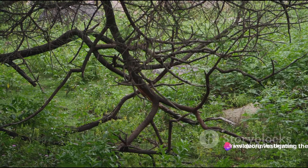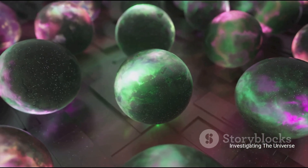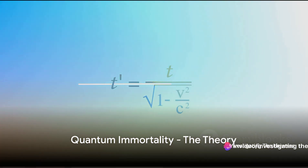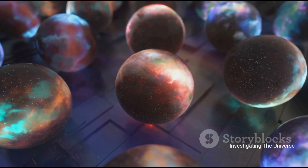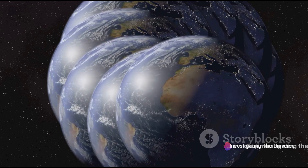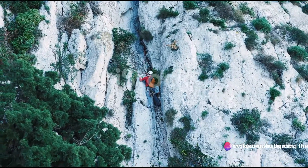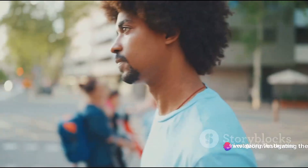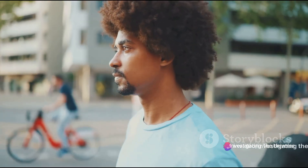In essence, the many-worlds interpretation proposes that for every decision you make, there are countless other versions of you in parallel universes making different decisions. Each branch of the tree represents a different universe where a different outcome has taken place. The universe is constantly branching into different realities, each as real as the one we experience. Armed with this understanding, we can now explore quantum immortality in more depth. It's a theory that suggests, in the grand scheme of the multiverse, you as a conscious entity never truly die. According to the many-worlds interpretation, a life-threatening situation will cause the universe to branch into two — in one universe you survive, in the other you do not. Your consciousness will only continue in the universe where you survive.